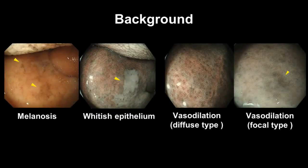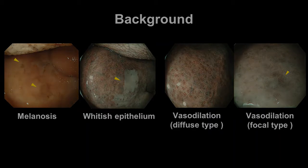We previously reported that the endoscopic findings of melanosis, white tissue epithelium, and vascular dilation in the soft palate are associated with a high risk of esophageal squamous cell carcinoma. In this case series, we present the three soft palate findings using the new endoscopic system.